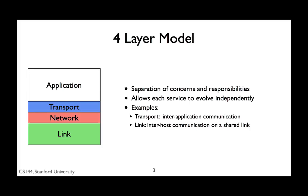The way this works is each protocol layer has some headers, followed by its payload, followed by some footers. For example, an IP packet header has a source address and a destination address. To send a TCP segment with IP, we make the TCP format the payload of the IP packet. In this way, the IP packet encapsulates the TCP segment. IP doesn't know or care what its payload is — it just delivers packets to an end-host. When the packet arrives, the host looks inside the payload, sees that it's a TCP segment, and processes it accordingly.